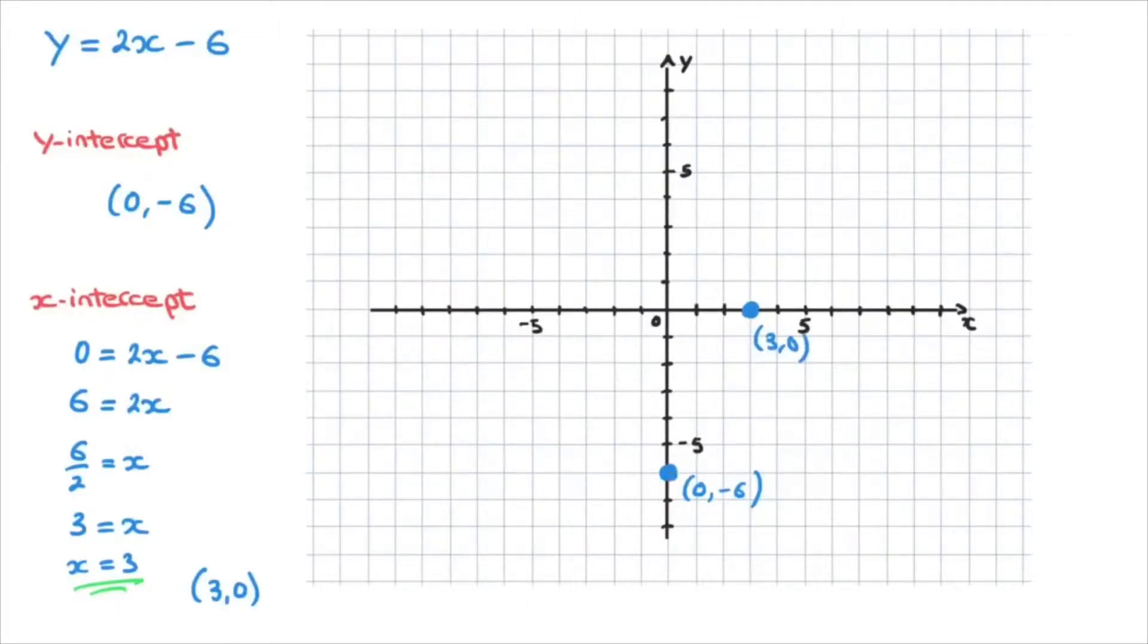We now have both points plotted on the xy grid. And now all we need to do is, with a ruler, draw the line that passes through these two points. And doing so would look something like this. There we go. And in fact, I'll label that line y equals 2x minus 6. And that's how we can draw a line given its equation.